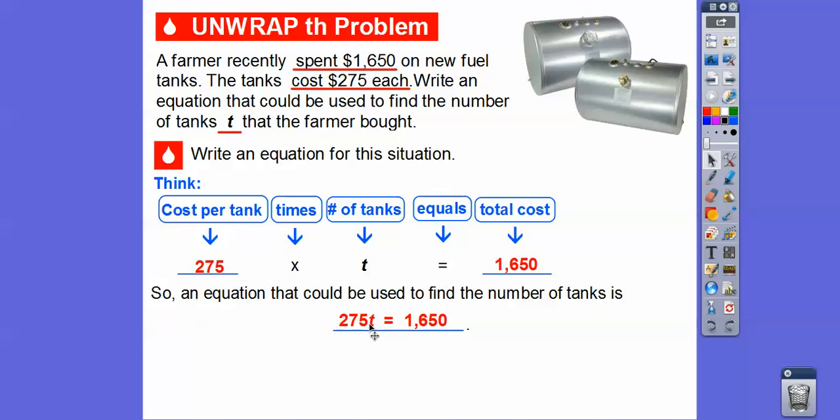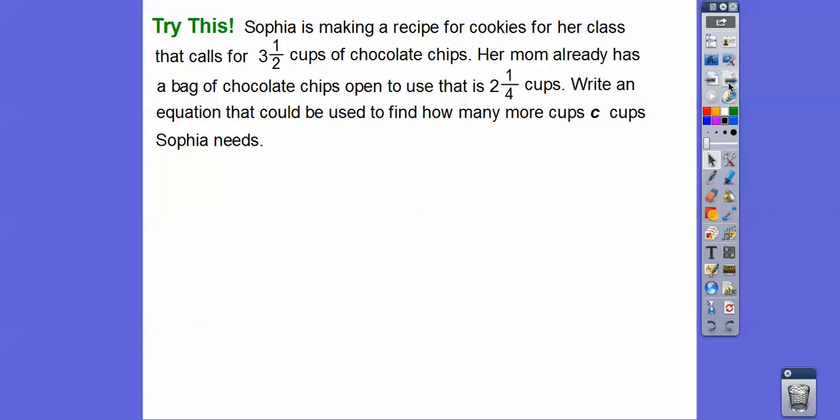So an equation that can be used to find the number of tanks would be 275T equals 1,650. Now remember, if there's nothing in between the 275 and T, it's understood to be multiplication. So this says 275 times T equals 1,650.